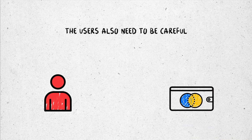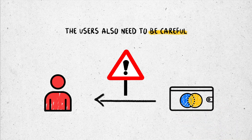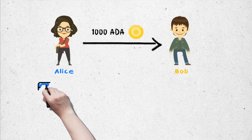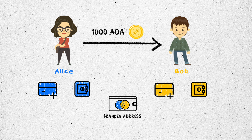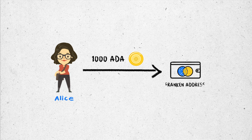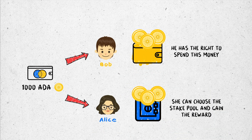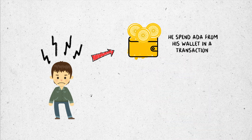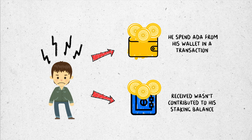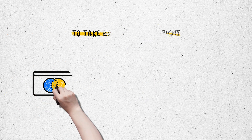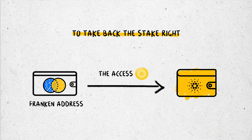In some cases, users need to be careful when receiving payment from other wallets due to the Franken address. If there are pros, there are cons. For example: Alice transfers 1000 ADA to the payment address Bob provided. Since anybody can create a Franken address, Alice uses the payment part of Bob combined with the delegation part of Alice to create a hybrid address and sends 1000 ADA to it. Bob receives 1000 ADA and has the right to spend it, but Alice is the one choosing the stake pool and gaining rewards from staking that 1000 ADA. This continues until Bob notices the asset wasn't contributing to his staking balance, or until he spends the ADA. To take back the stake right, Bob simply needs to transfer all assets back to his correct address.